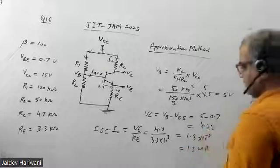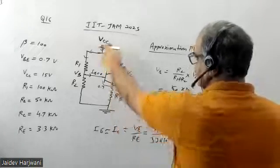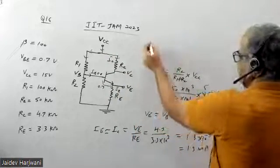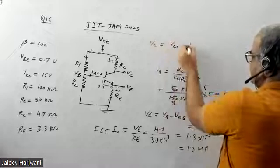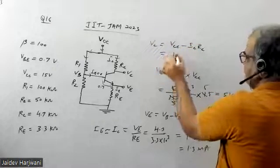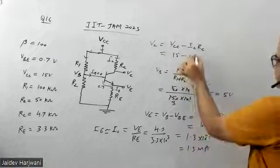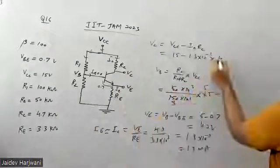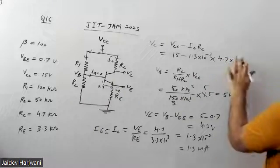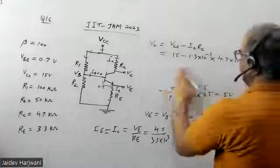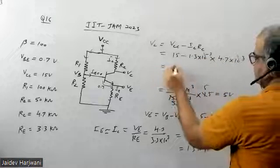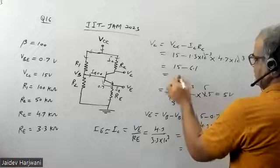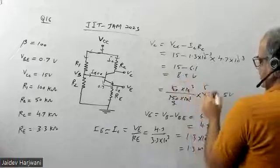Now I know IC, so I can find the drop and calculate VC. VC equals VCC minus IC times RC. VCC is 15V, IC is 1.3 milliamperes, and RC is 4.7 kilo-ohms. Solving: 1.3mA times 4.7kΩ gives 6.1V, so VC equals 15 minus 6.1, which is 8.9 volts.